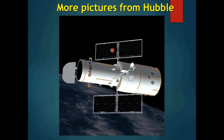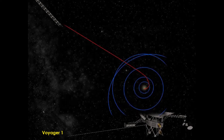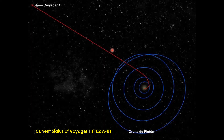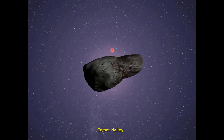Here are some more pictures: this is a NASA satellite image. This is the Voyager, which was also one of the projects that was launched. Here you can see the path of Pluto and the current status of Voyager. This is the dwarf planet Eris, captured by the Hubble telescope.